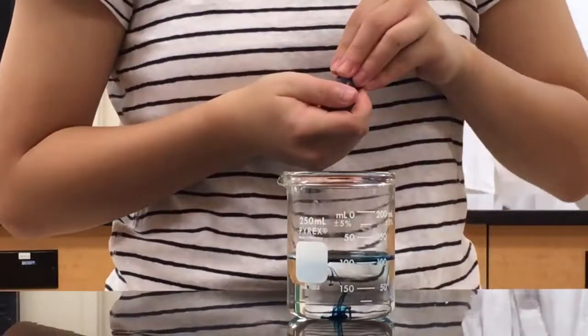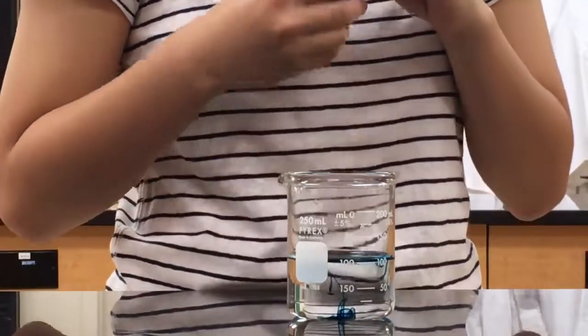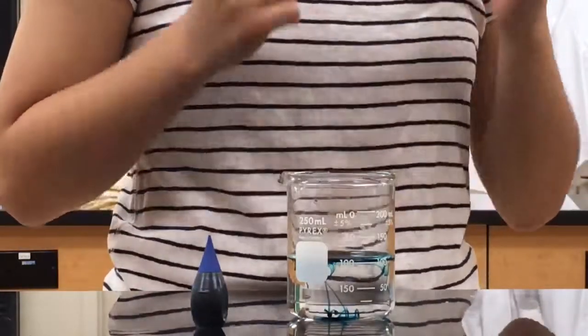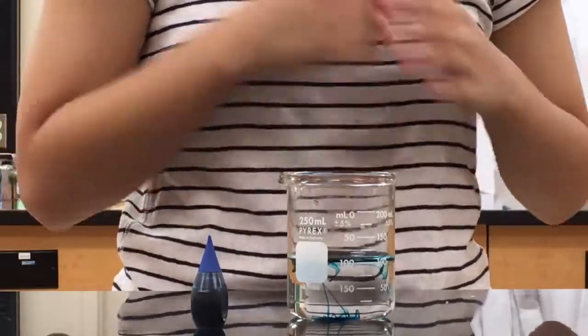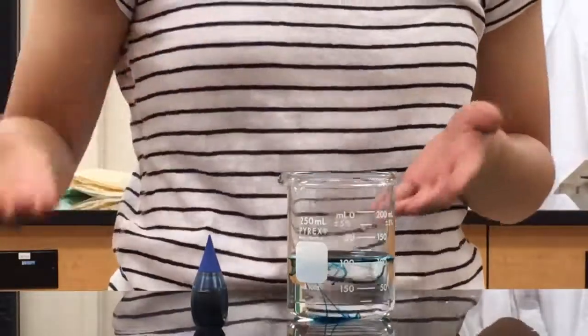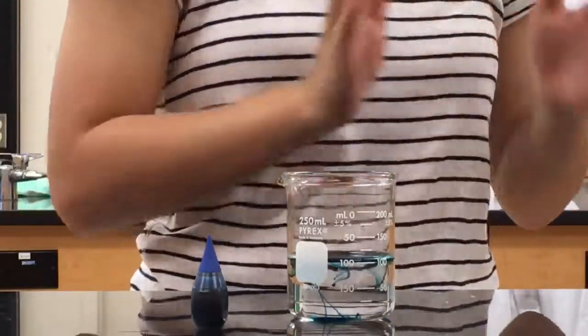So as you see, over time the blue ink gets evenly distributed in the water. And this demonstrates that the particles of water and ink both possess motion. And due to the motion of particles, the two liquids, the water and the ink, are able to mix with each other.